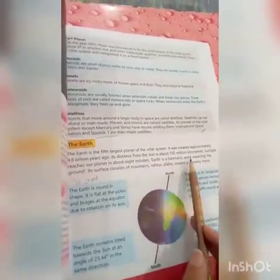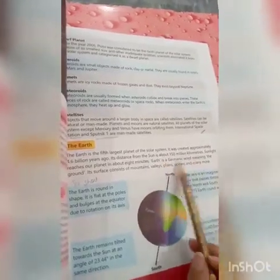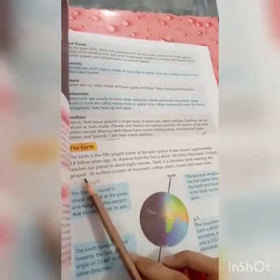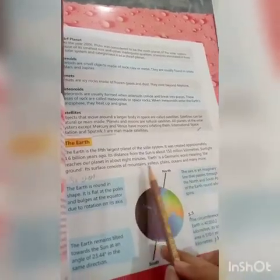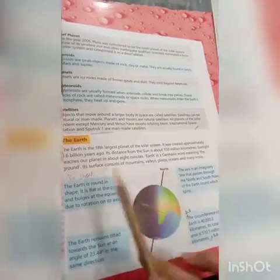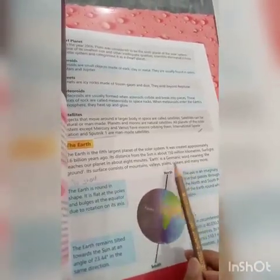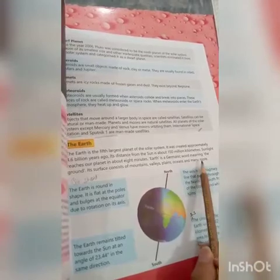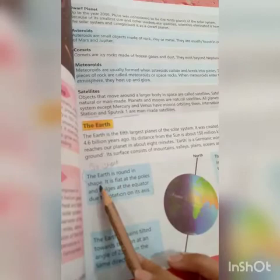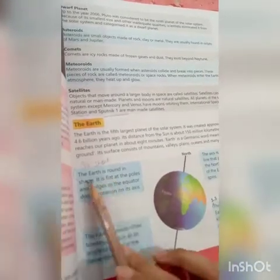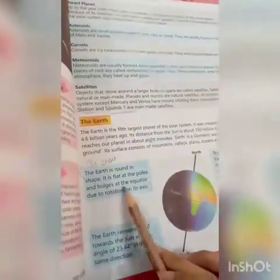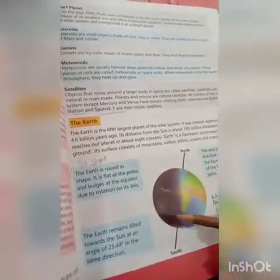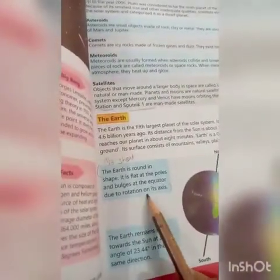Earth is a Germanic word meaning 'the ground.' Its surface consists of mountains. The Earth is round in shape — it is flat at the poles and bulges at the equator, due to the rotation on its axis.